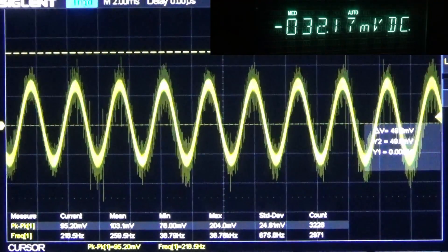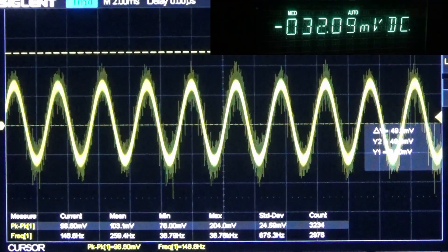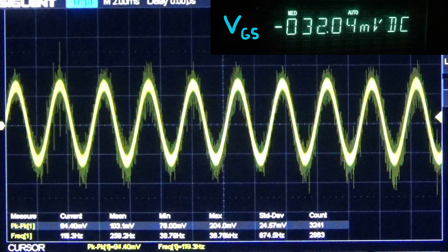The measurements being displayed are the DC value of the gate to source voltage, so what controlling voltage we're applying, and the output. When I probe the gate to source voltage, I'm adding a little noise to the circuit, so that's why we're seeing it now.